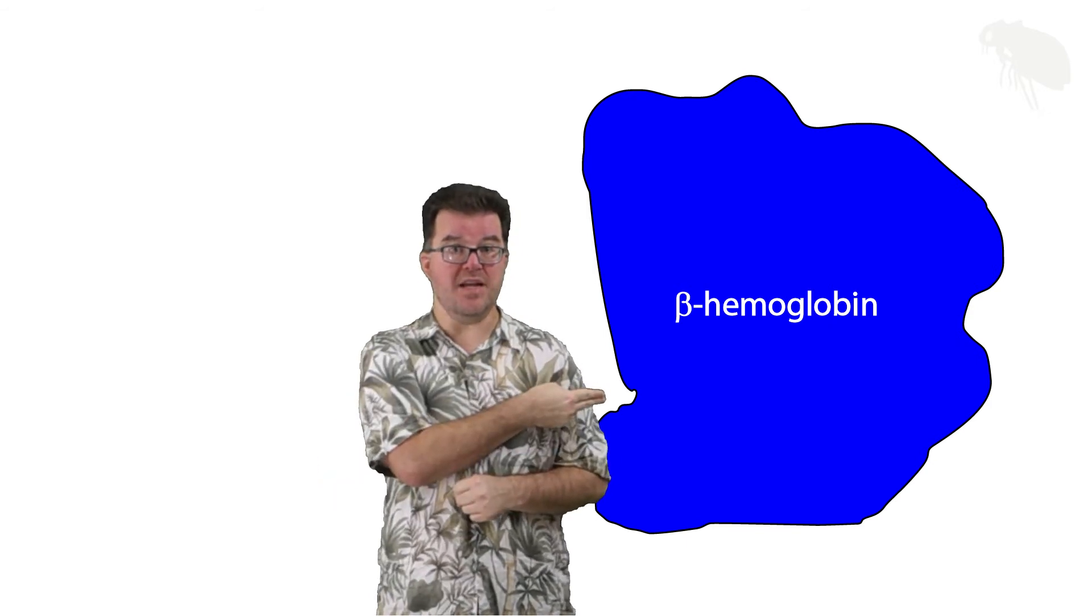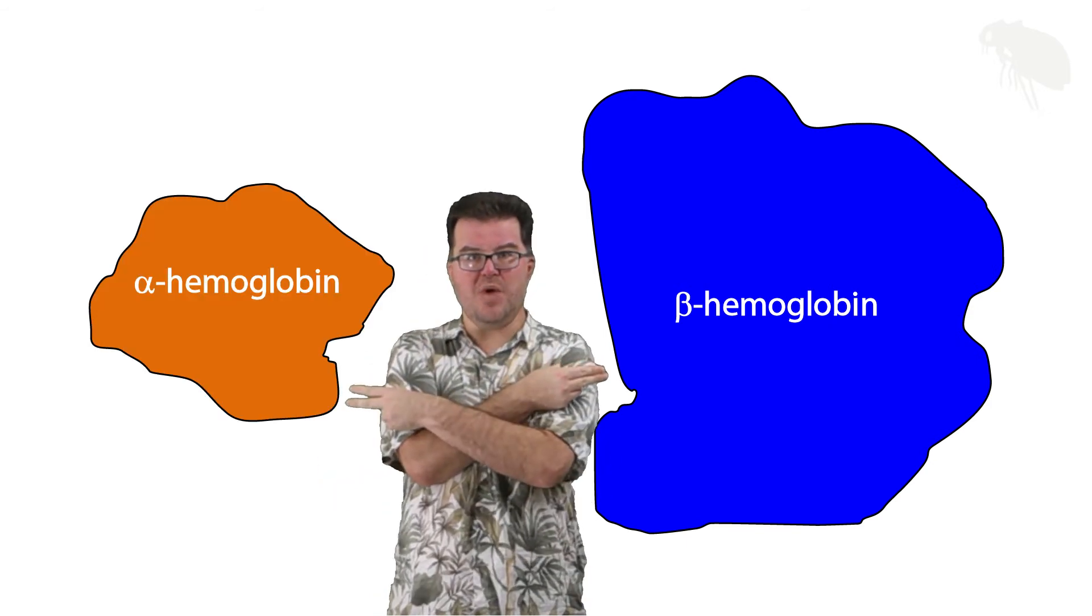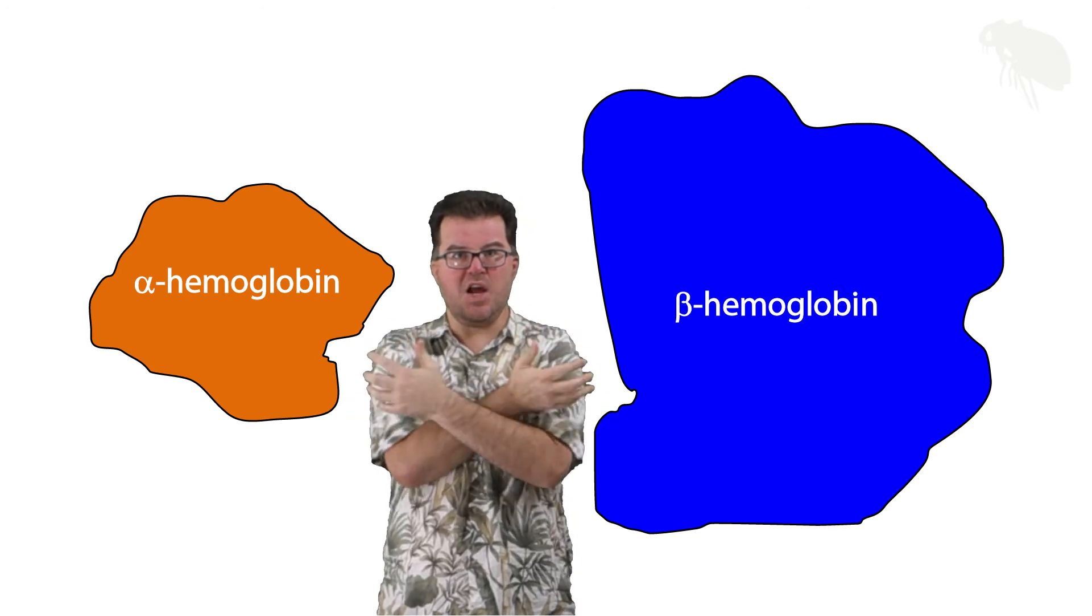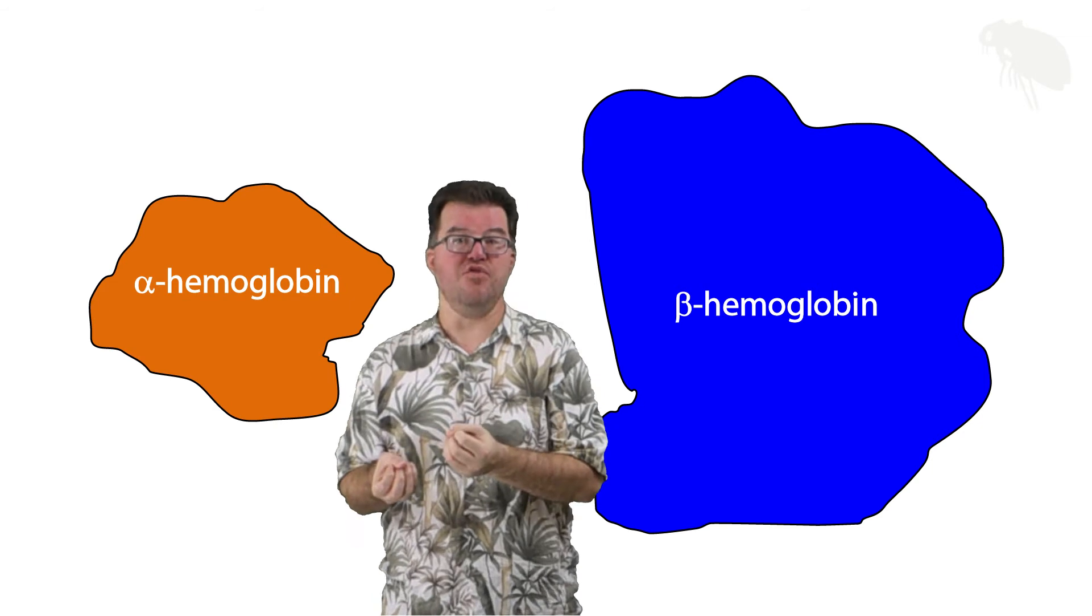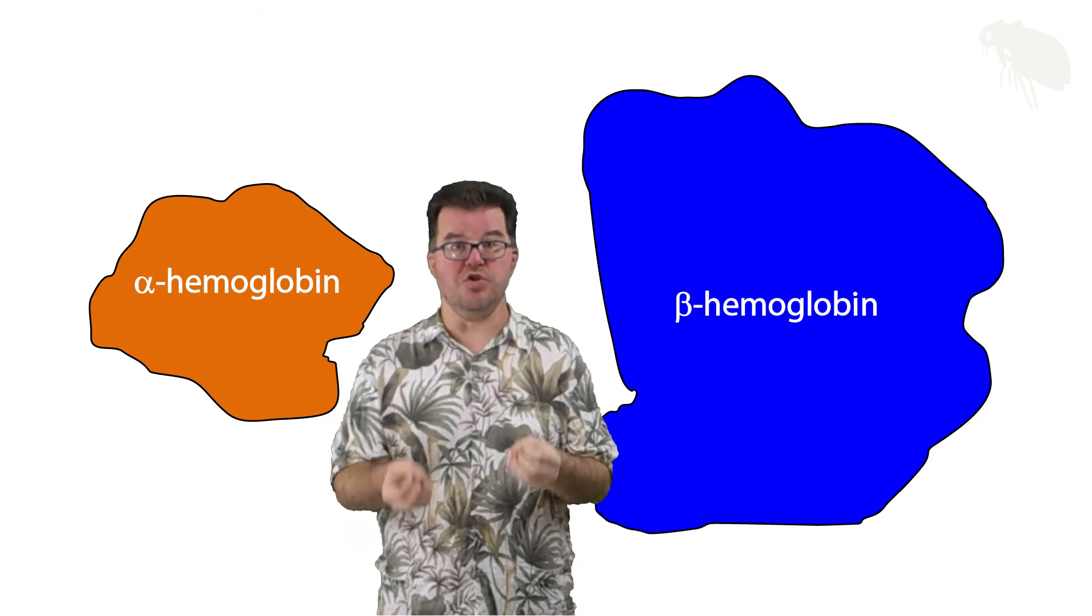So actual functioning hemoglobin is made of two beta hemoglobin and two alpha hemoglobin. It's that combination of all four that give us the final functioning version of the protein, which is the quaternary structure.